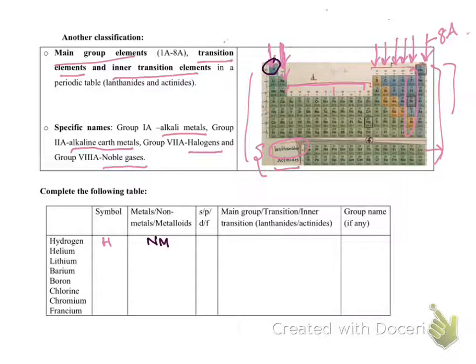And I forgot to tell you one thing - these elements here in the first and second A groups are known as s-block elements. From here to here, 3A to 8A, are known as p-block. In the middle, these short column transition elements are d-block, and here, inner transition are f-block elements. Why s, p, d, f? You will see it soon.